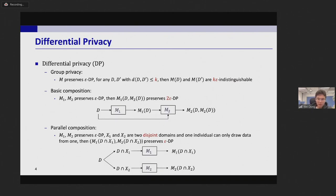The third one is parallel composition. Here X1 and X2 are two different domains and one individual can only draw data from one. If we separate D with X1 and X2 and then input them into M1 and M2, we do not need to separate the privacy budget.